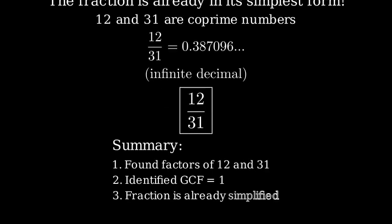To summarize, we found the factors of both numbers, identified their greatest common factor as 1, and concluded that 12 over 31 is already in its simplest form because 12 and 31 are coprime numbers.